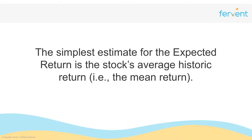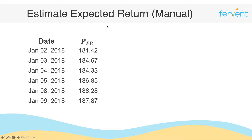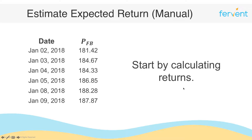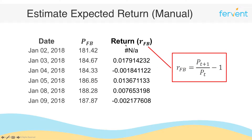Say for instance you pulled a little bit of stock price data — I've got 6 days of price data for Facebook here. What we want to do to get the expected returns is to start by calculating returns. Remember that the return is simply pt plus 1 over pt minus 1, so you would take $184.67 divided by $181.42 and subtract 1 to get 0.017914232. It's really tempting to round off these numbers, but I would strongly encourage you not to — rounding at this stage distorts them even further. I would wait to round off numbers until you get to the final answer.